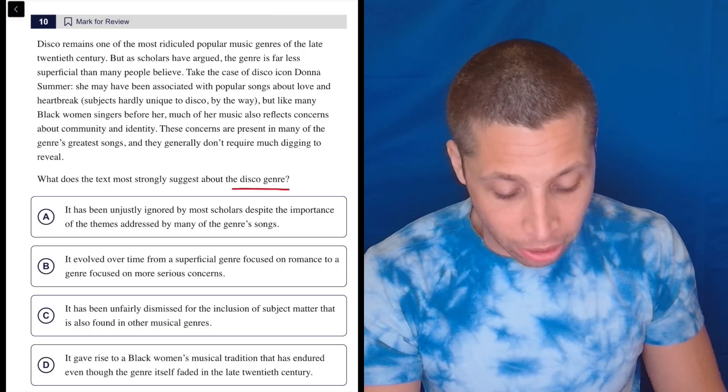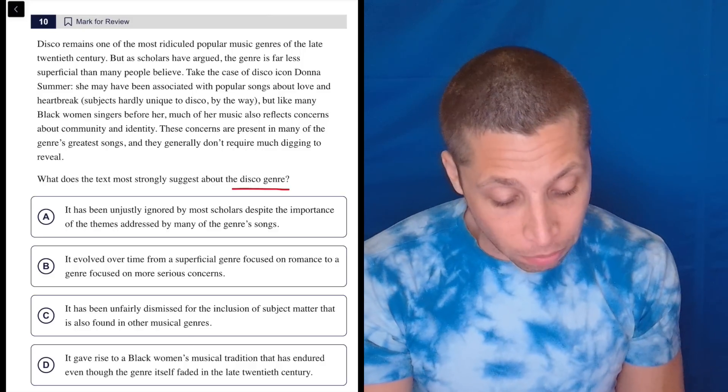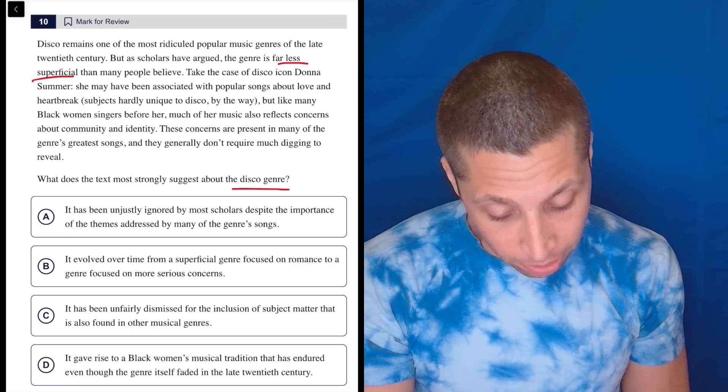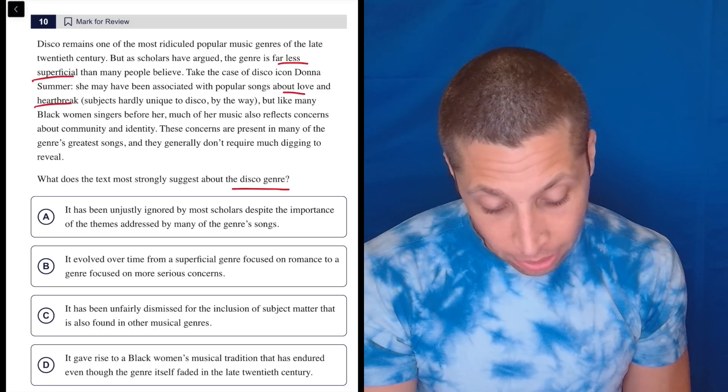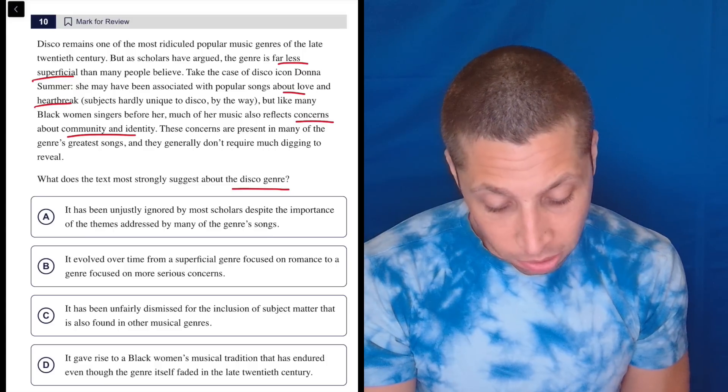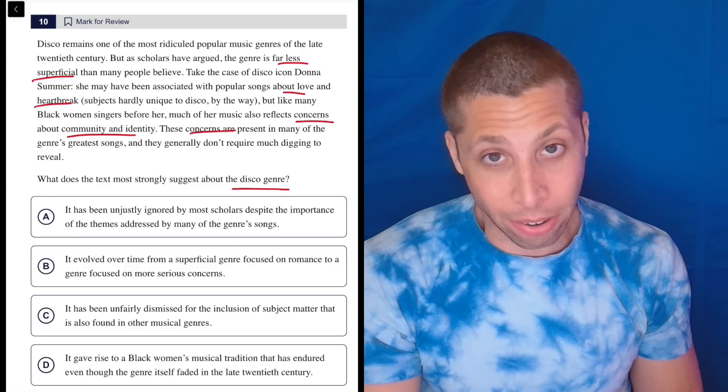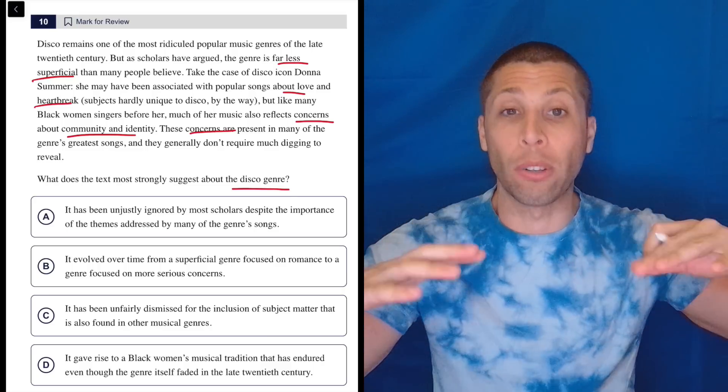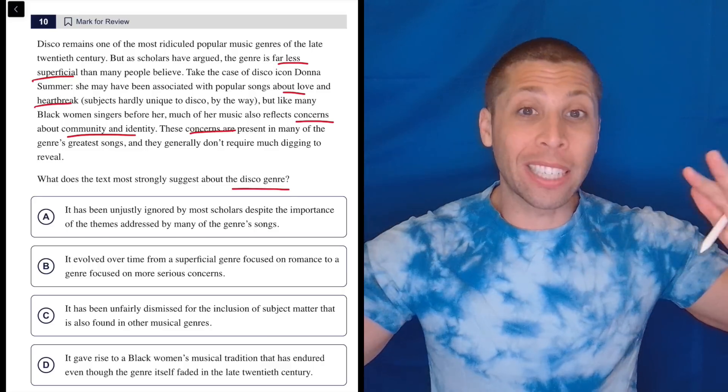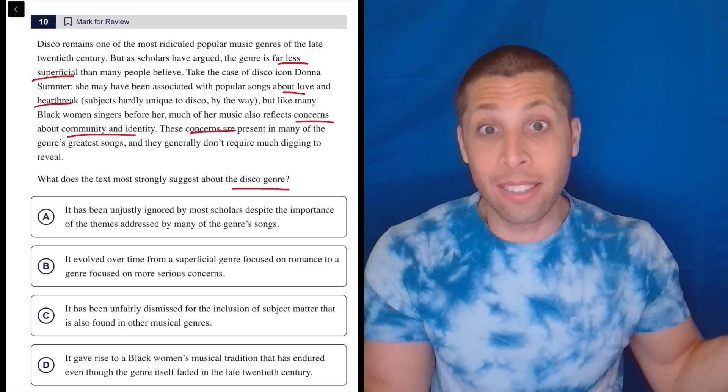But like many black women singers before her, much of her music also reflects concerns about community and identity. These concerns are present in many of the genre's greatest songs, and they generally don't require much digging to reveal. So I don't know, right? Like it's not superficial. It's deep, right? It's got love, heartbreak, concerns. I don't know, it's more than superficial. Superficial means surface level, fake, shallow, not very complex, right? So they're saying that it's complex. They're saying that it's deep.